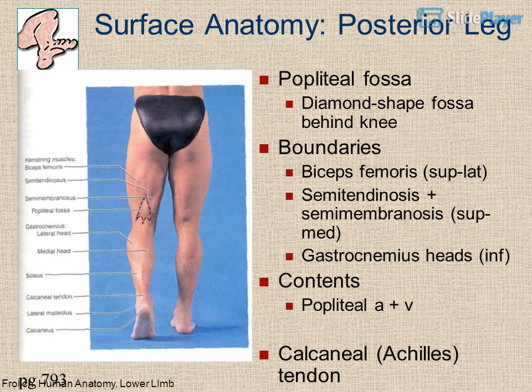Surface anatomy of the posterior leg: the popliteal fossa is a diamond-shaped fossa behind the knee. Boundaries: biceps femoris (superolateral), semitendinosus plus semimembranosus (superomedial), gastrocnemius heads (inferior). Contents: popliteal artery and vein. Also note the calcaneal (Achilles) tendon (page 793).